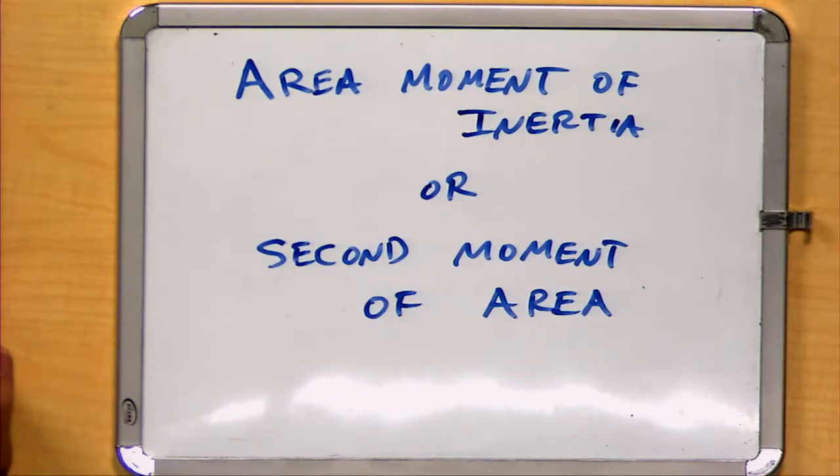So today we're going to talk about a concept, a relatively complex concept, a geometrical concept, known as the area moment of inertia, or as it's often called as well, the second moment of area.